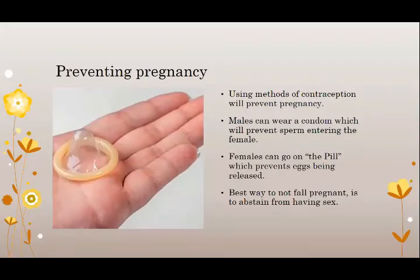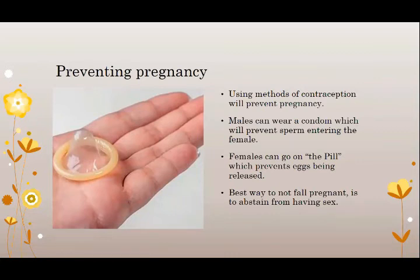Ways to prevent pregnancy. Using methods of contraception will help to prevent pregnancy. Males can wear a condom which will prevent sperm from entering the female. Female condoms work in the same way — they also prevent sperm from entering the female. Females can also go on the contraceptive pill which prevents eggs from being released from the ovary. The best way to not fall pregnant, however, is to abstain from having sex. The word abstain means to not have sex at all.